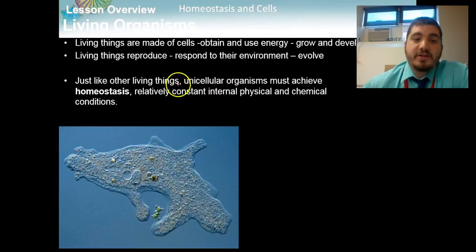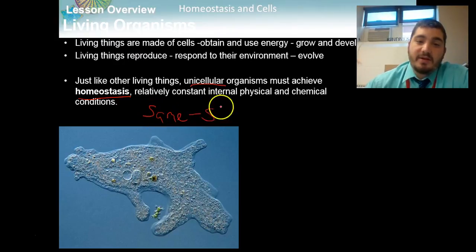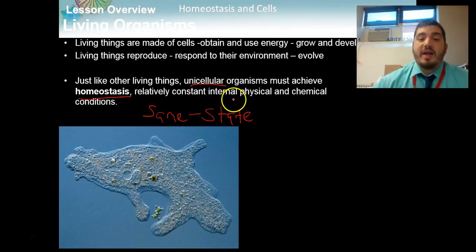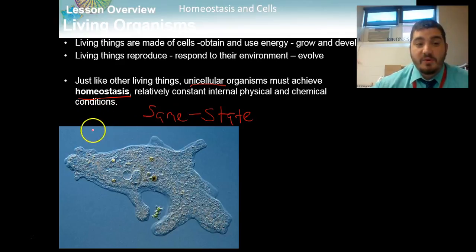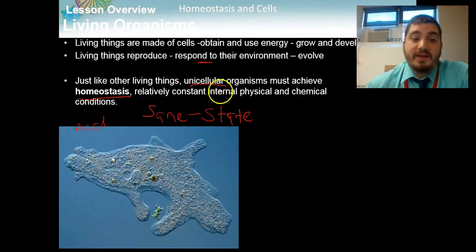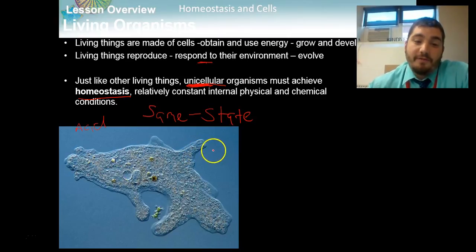We're revisiting a term: just like other living things, unicellular organisms must achieve a state called homeostasis. Homeostasis means 'same state.' An organism, whether it's one cell or many cells like the hippo, needs to maintain a relatively constant internal and external physical and chemical condition. If something outside the organism, like acid, is going to cause it to change, it needs to respond. Otherwise, it will no longer maintain homeostasis and it's not going to survive. Unicellular organisms still maintain homeostasis, but they have to do it all on their own within one cell — they need to be self-sufficient.